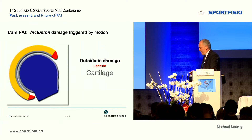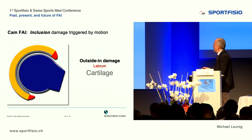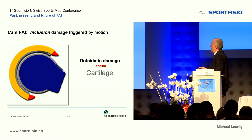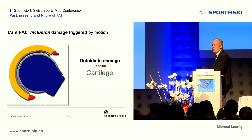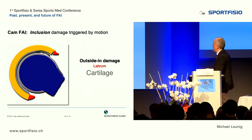Here is an animation showing how that works. With a normal-sized acetabulum, the asphericity enters the joint, creating shear forces at the cartilage and shearing it off the subchondral bone. This is a classic CAM-type lesion. The labrum is not so much damaged — it is mainly a cartilage damage.